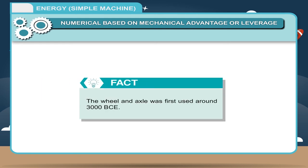FACT: The wheel and axle was first used around 3000 BCE.